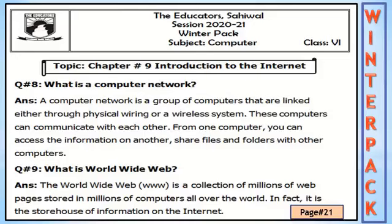Open page number 21 from your winter pack. We are going to read chapter number 9, Introduction to the Internet. Question number 8: What is a computer network? A computer network is a group of computers linked either through physical wiring or a wireless system. These computers can communicate with each other, share files and folders, and access information from other computers.